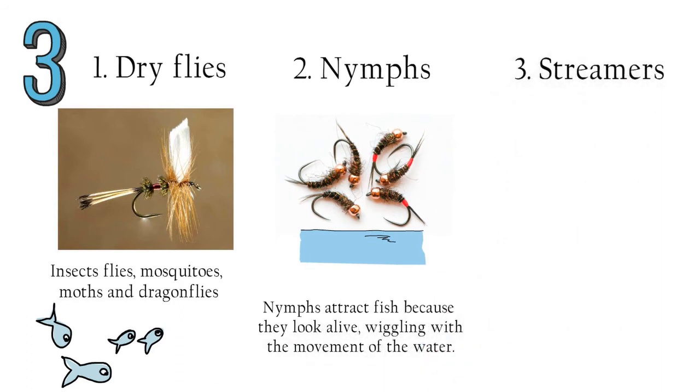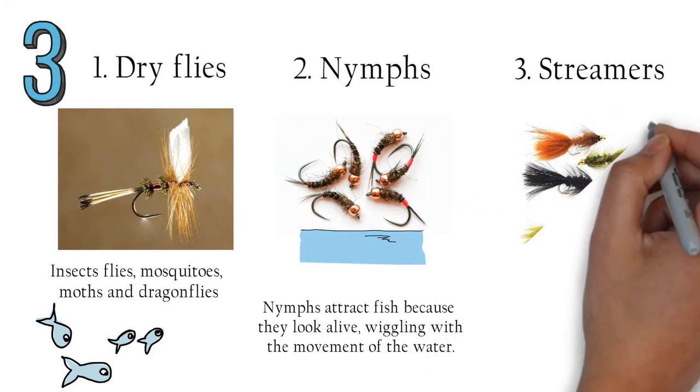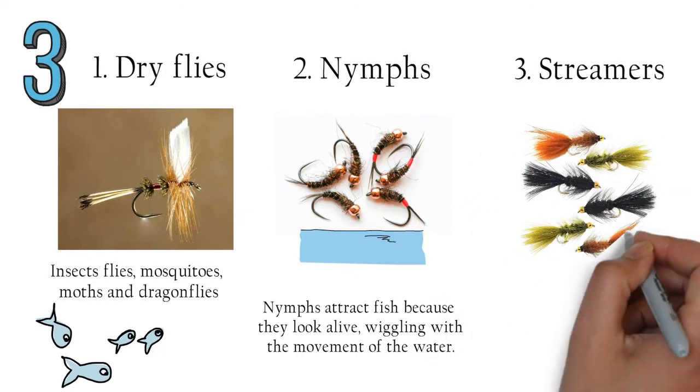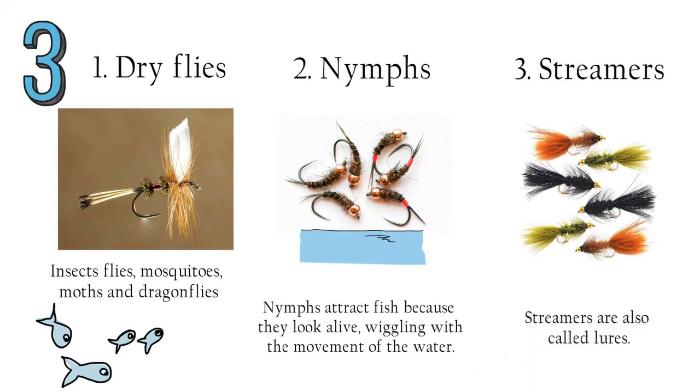Streamers: a lot like nymphs, streamers are made to look and act like aquatic creatures, but are larger. They are often used to catch bigger fish. Streamers are also called lures.